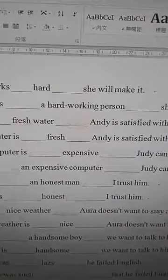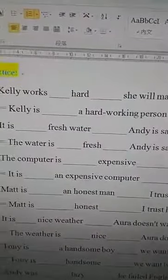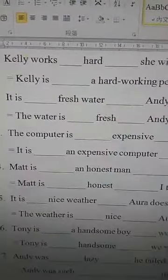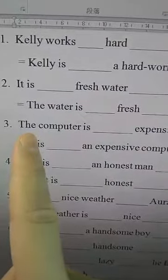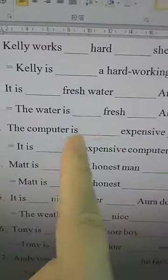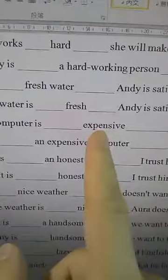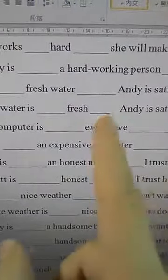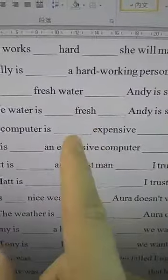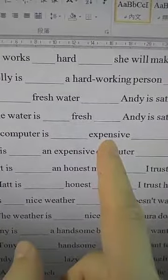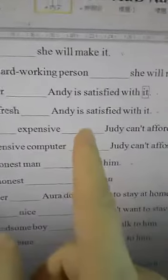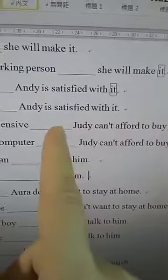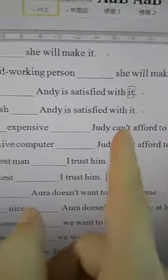Number three: 'The computer is ___ expensive ___ Judy can't afford to buy it.' You don't have to see the rest of the sentence — 'expensive' is an adjective, so we use 'so': 'The computer is so expensive that Judy can't afford to buy it.'